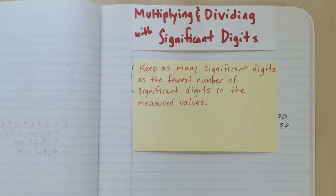Now when multiplying and dividing with significant digits, the rule changes a little bit. We need to keep as many significant digits in our answer as the fewest number of significant digits in the measured values.